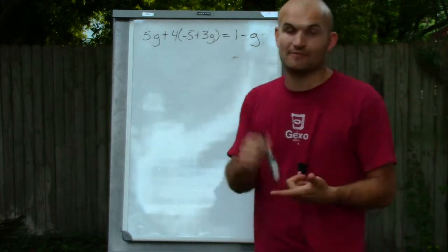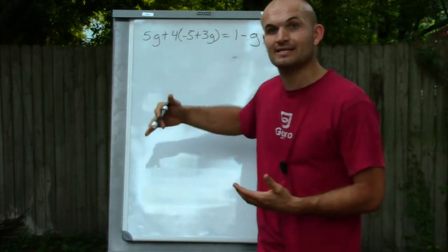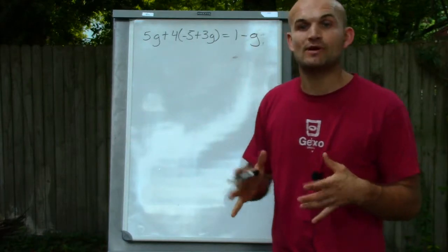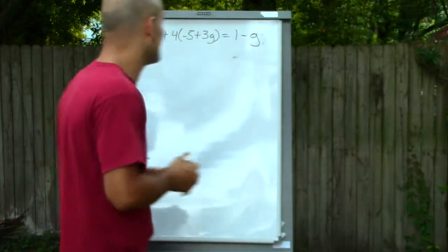Before we can get g by itself, we're going to have a one-step equation. And usually with the multi-step, before we have a one-step equation, we're going to have a two-step equation. So what we're going to want to do is try to simplify this to get it down to a two-step equation.